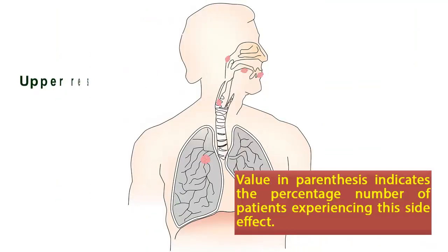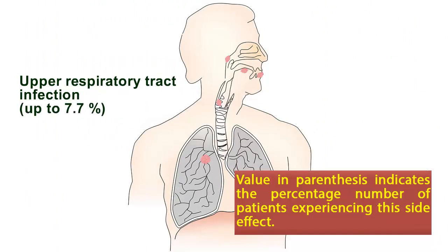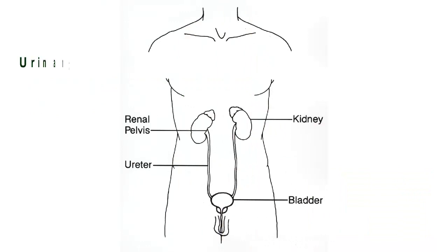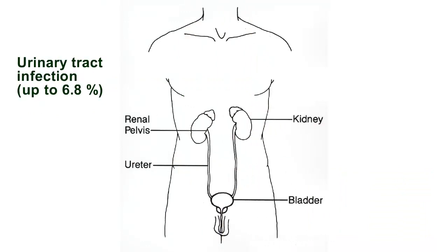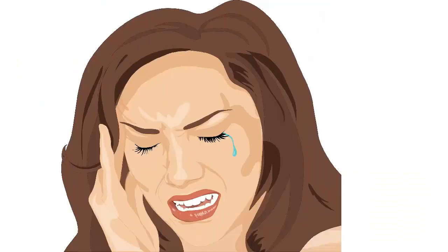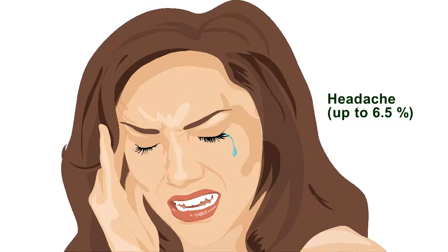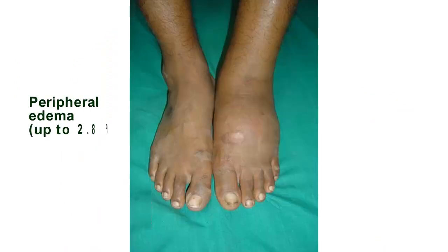Upper respiratory tract infection: up to 7.7%. The value in parenthesis indicates the percentage of patients experiencing this side effect. Urinary tract infection: up to 6.8%. Headache: up to 6.5%. Peripheral edema: up to 2.8%.